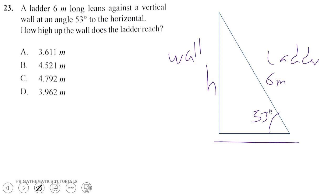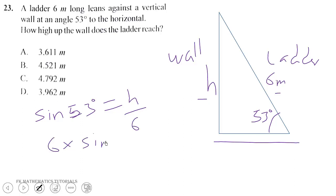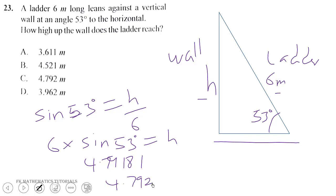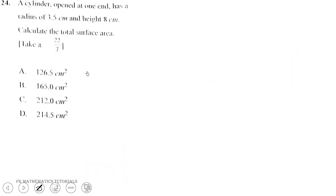The angle it makes with the horizontal is 53 degrees. We have the angle and the hypotenuse, and we want the opposite side. So sine 53 equals opposite over hypotenuse: 6 times sine 53 gives how high up the wall it reaches. That gives us 4.7918, which to 3 decimal places is 4.792 meters.